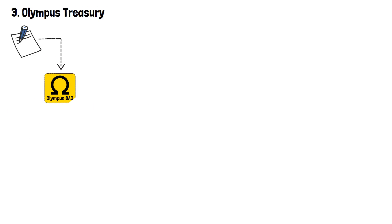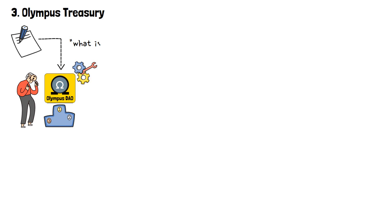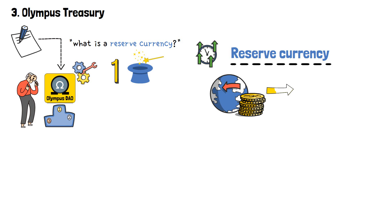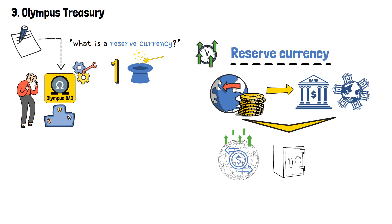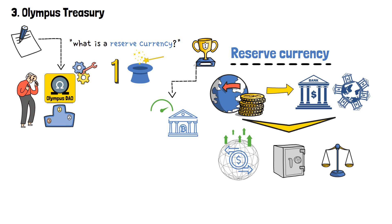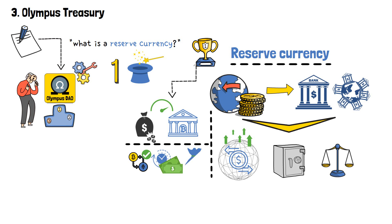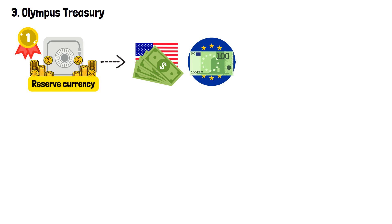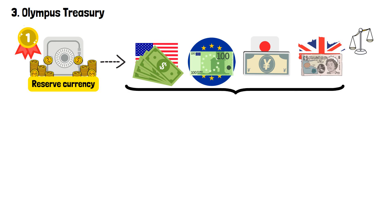By now, we have established what makes Olympus DAO and OM so ambitious and outstanding. But let's take a closer look at how this reserve currency works. A reserve currency refers to a widely accepted and held currency by central banks and international institutions as a means to facilitate international transactions, store value and maintain stability in the global financial system. The primary reserve currency historically has been the US dollar, but other currencies like the euro, yen and pound sterling have also served as reserve currencies to varying degrees.